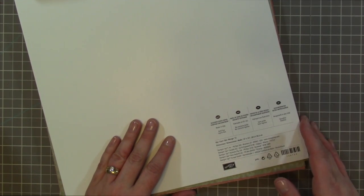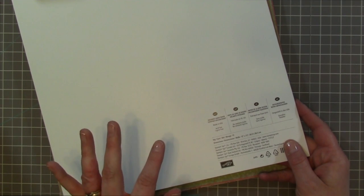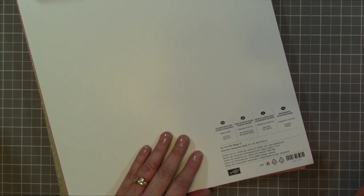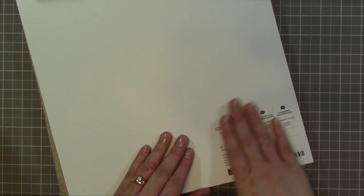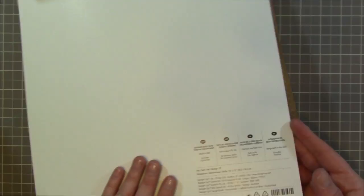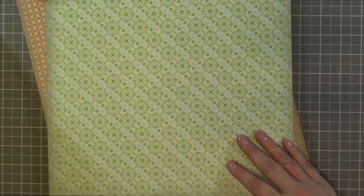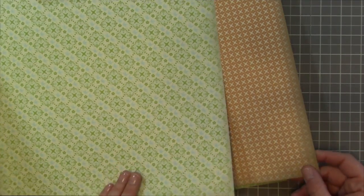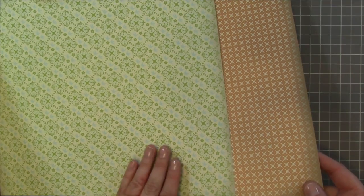The first thing I wanted to share with you is designer series paper. This is from the current annual catalog, Everyday Enchantment. This one for some reason does not list the colors on the information sheet that comes with the papers. It comes with two sheets of each pattern, so I already flipped them over so you can see the front and the back without me having to keep flipping everything back and forth.